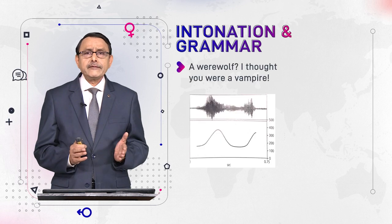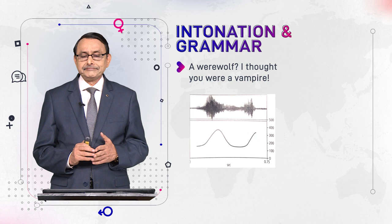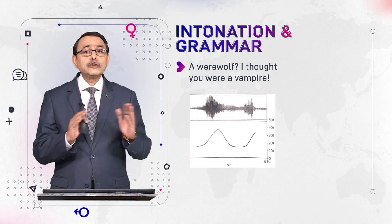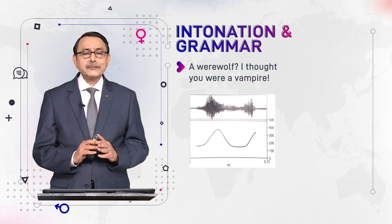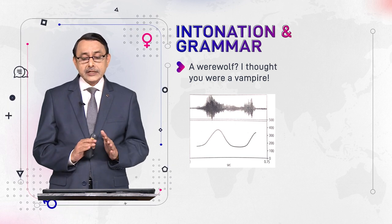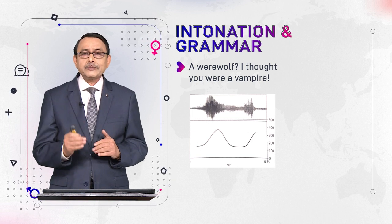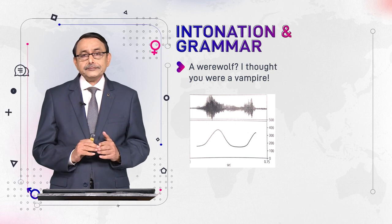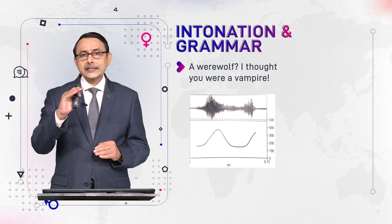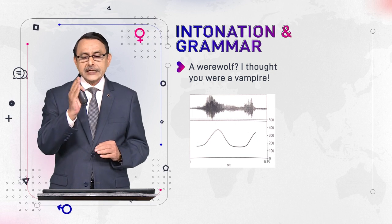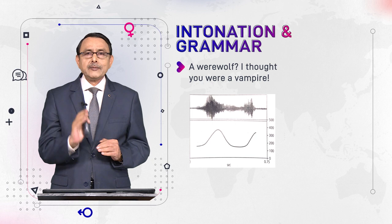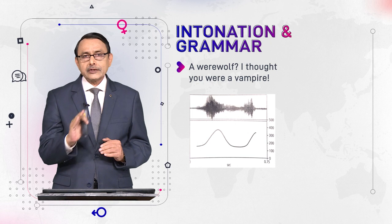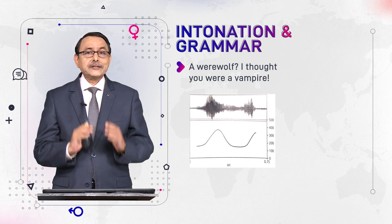'A werewolf? I thought you were a vampire.' Here the intonation pattern is more complicated. If you look at the curve in the lower part of the diagram on the right side, you will see the curve first rises, then falls, and then rises again — a rise-fall-rise pattern, which is a complicated pattern.